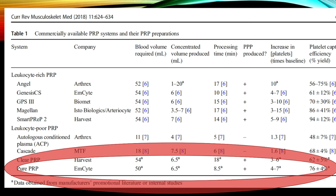Here's an example of why our company recommends M-Site. This study compared many different systems — leukocyte-poor systems being those with second spin capability. M-Site showed really good concentrated volume produced, the ability to produce PPP, and a five-times increase in platelets from baseline, which is clinical grade. Capture efficiency is also important; if you get up to ten, eleven, or twelve times, you're probably going too far, but you definitely want clinical grade.